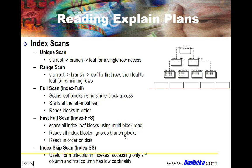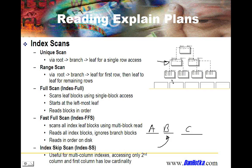Skip Scanning is something I have not seen in a production explain plan, but you might see it. It occurs when you have a multi-column index — say columns A, B, and C — and your query only references column B with no other index starting with column B. At the branch level, Oracle can determine whether matching rows exist in the underlying leaf blocks and skip those it doesn't want. If you see skip scanning, that's an opportunity for a better index — that's how I interpret seeing a skip scan in an explain plan.